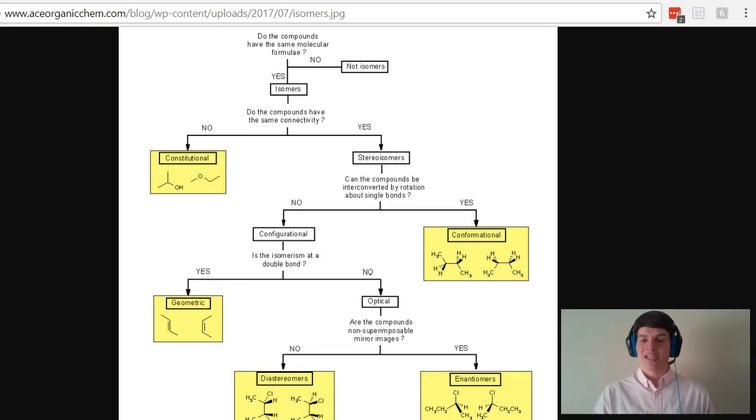Stereoisomers have the same components, they have the same connectivity, but they're different in the way that they're arranged in space. And now we ask ourselves, can the compounds be interconverted by rotation about single bonds? If yes, we're dealing with conformational isomers.